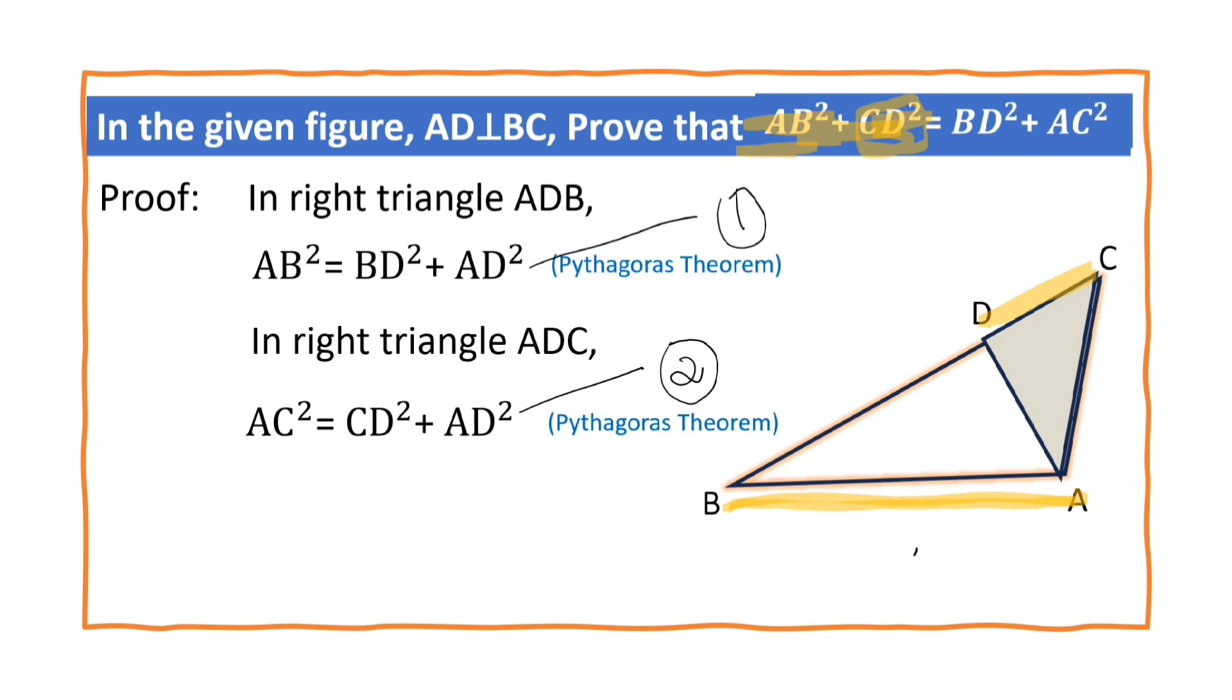If you observe, AB is there, here. This is AB. CD, this is CD. This is BD, here it is. This is AC, here it is. AD is extra.